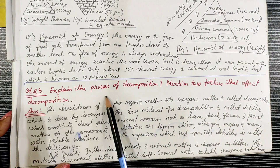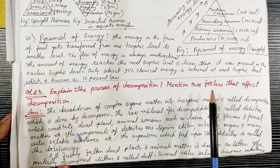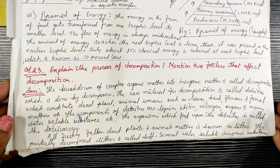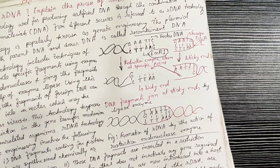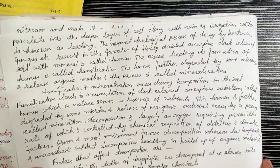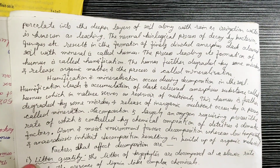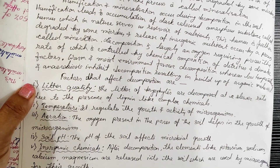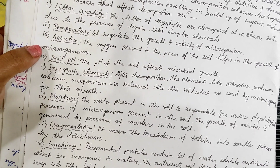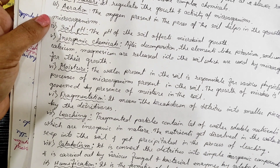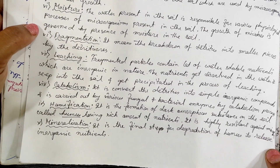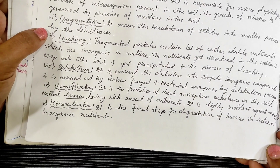Next: explain the process of decomposition and mention two factors that affect it. Factors affecting decomposition include: litter quality, temperature, aeration, soil pH, inorganic chemicals, moisture, fragmentation, leaching, catabolism, humification, and mineralization.